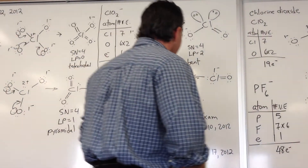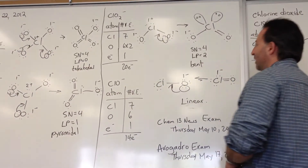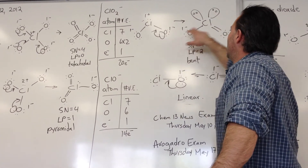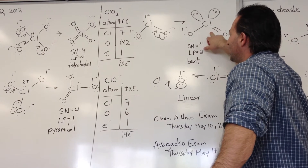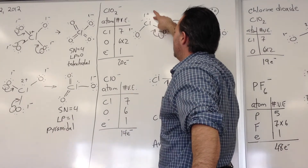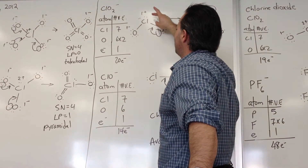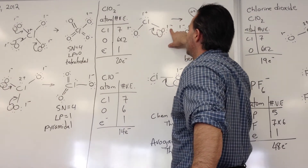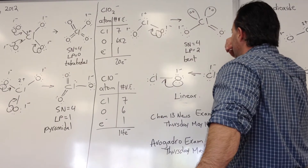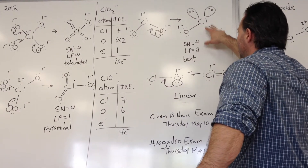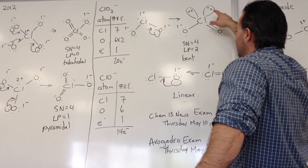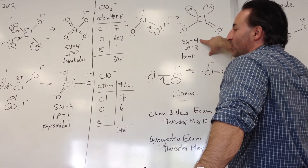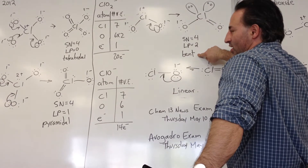Then we have the chlorite anion, with 20 electrons in its Lewis structure. Notice that initially there are two lone pairs on the chlorine atom, and then we move in one of these lone pairs to reduce the formal charge on oxygen, which also gets rid of the formal charge on chlorine. That gives a structure with two lone pairs — I drew them like little ghosts. The steric number is 4 with two lone pairs, and that suggests a bent geometry.